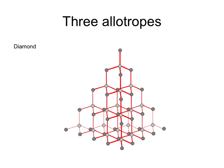One allotrope, diamond, has this giant structure where each carbon atom is joined to four others. When we talk about a giant structure, we mean a structure which goes on for many billions of atoms in all directions, and this picture only shows a small section of that giant structure.